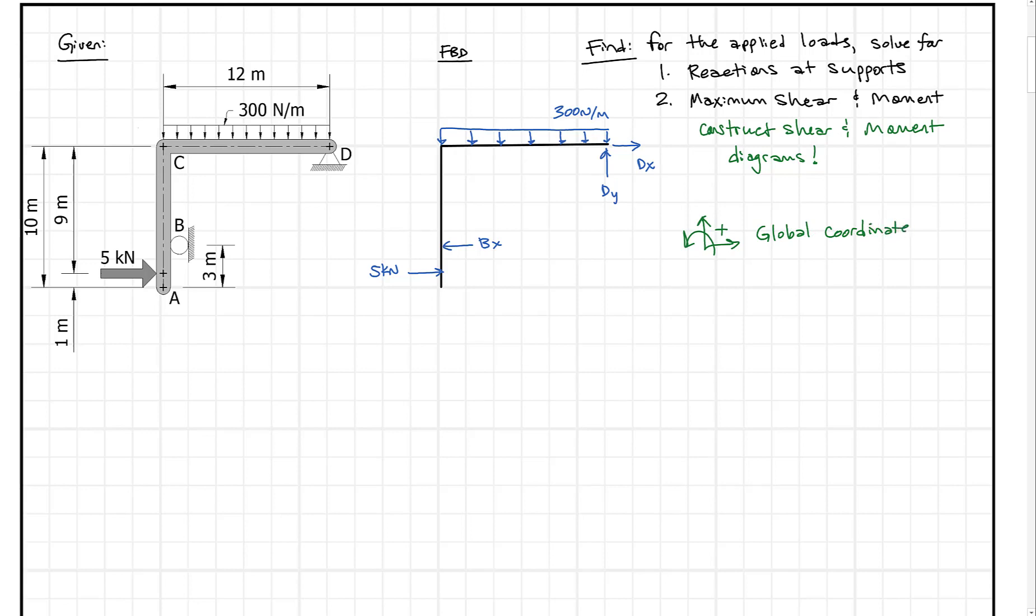Speaking of equations of equilibrium, let's get started using them. With this question, I like to step back and look first: are there anywhere there's only one x-force or one y-force that's unknown? If so, we can start with that. We can see at Dy there's only one vertical force. Bx and Dx are two horizontal forces, so we can't use one equation. We'll start with sum of forces in the y-direction equals zero.